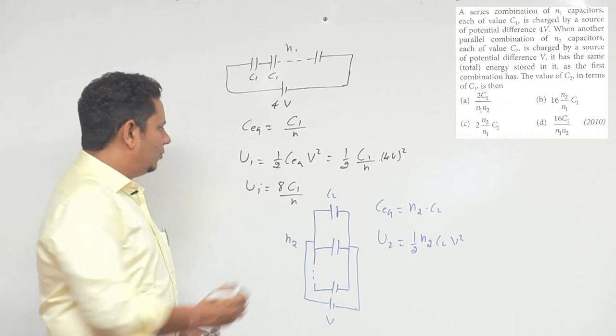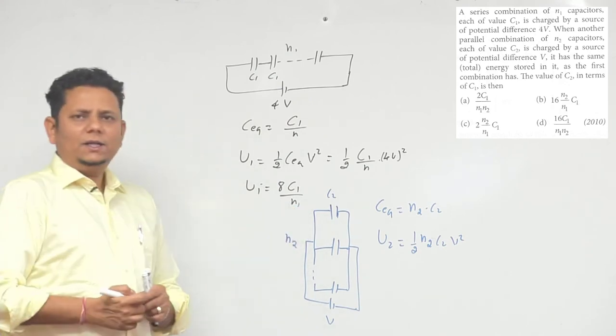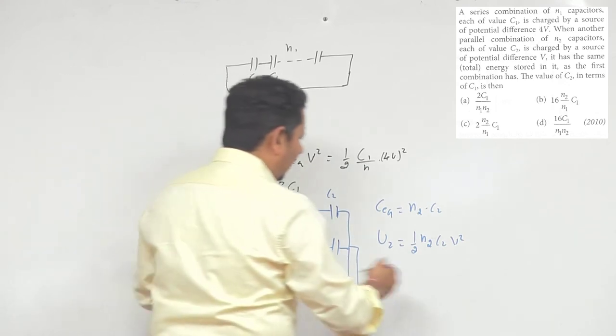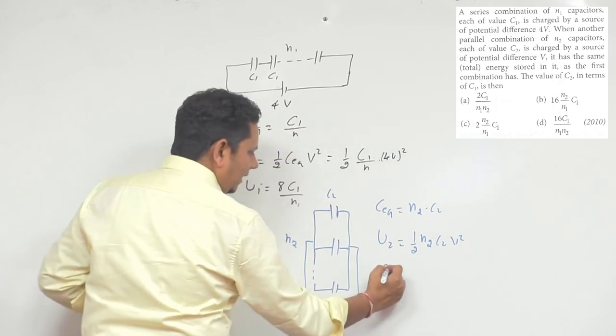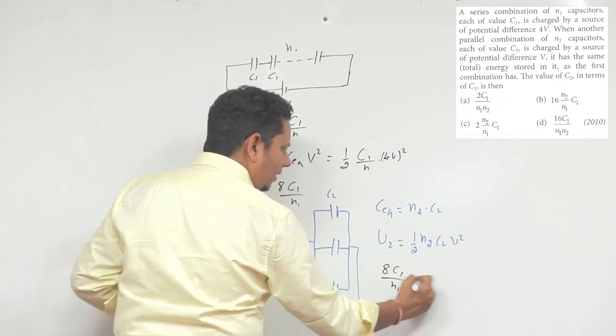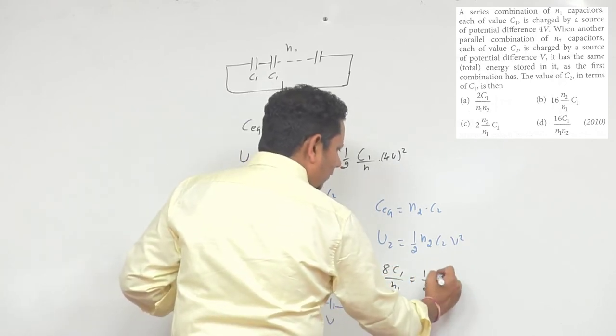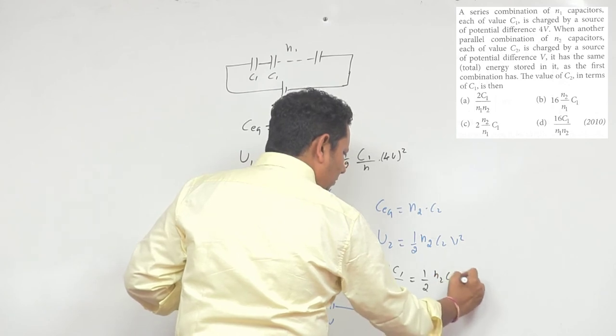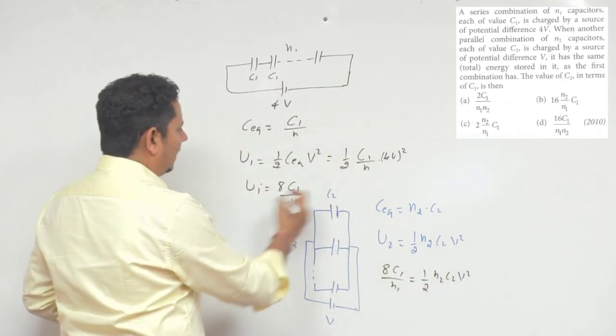Now we're told that U1 and U2 are equal. So we'll equate these two cases. We can write: 8C1 divided by N1 will be equal to half N2C2V squared.